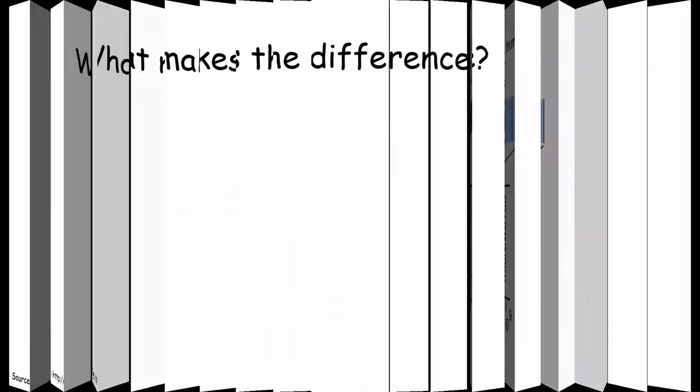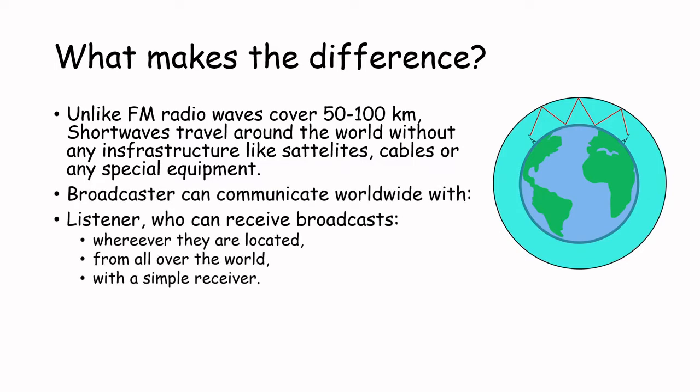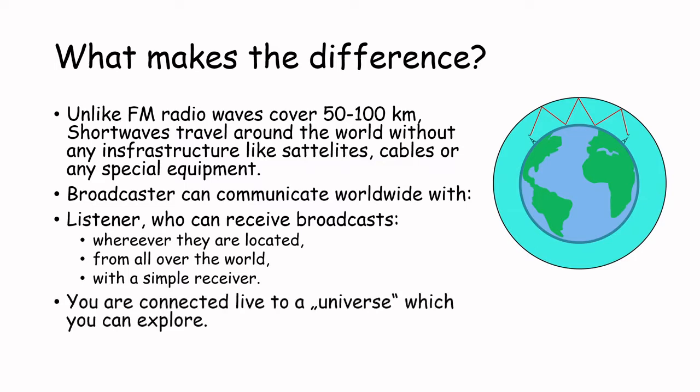But what makes the difference? Unlike FM radio waves, which cover a maximum of about 50 to 100 kilometers, shortwaves can travel thousands of kilometers around the globe by bouncing between the ground and the atmosphere, without any infrastructure like satellites or cables. This enables broadcasters worldwide to reach listeners like you, anywhere they are, with a very simple shortwave receiver. The shortwave radio opens for you a whole new universe to explore, making shortwave radio listening a great adventure and a great hobby.